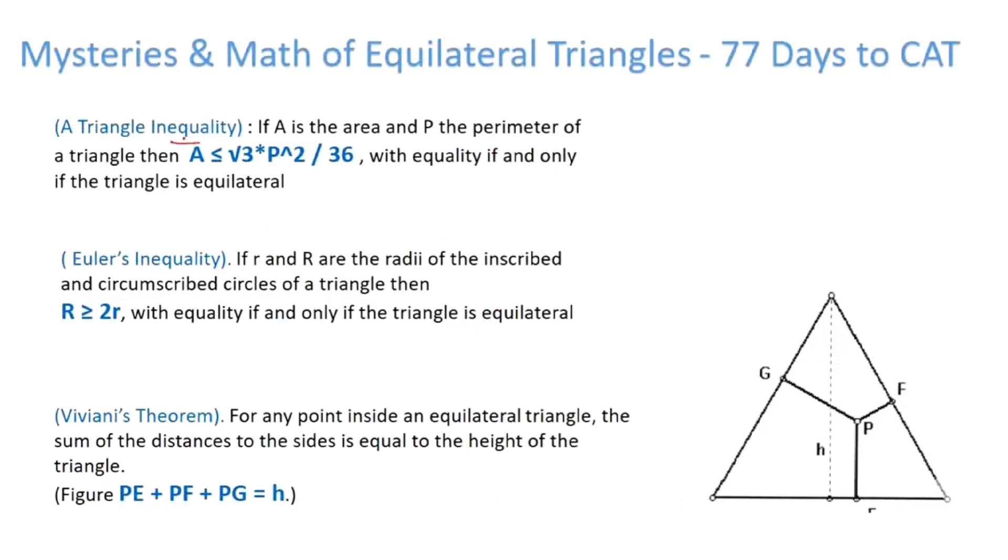First is a triangle inequality. If A is the area and P is the perimeter of a triangle, then A is less than equal to root 3 into P square by 36. For example, let's say perimeter is 3. We see an equilateral triangle 1, 1, 1. So perimeter is 3. So if you just plug it in, root 3 upon 36 into 3 square is 9, so area is root 3 by 4. Remember this equality sign always holds only for equilateral triangle. For all the other triangles, area is always less than root 3 P square by 36, where P is the perimeter. You can use it in answer option elimination in a lot of triangle questions.